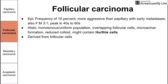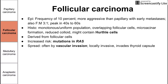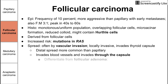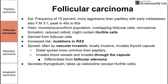Follicular carcinomas are also derived from follicular cells, like papillary. There's an increased risk in people with RAS mutations, a proto-oncogene. Follicular carcinoma is unique in that it often spreads by vascular invasion through the blood. It does have a capsule surrounding it, and what defines follicular carcinoma is that it breaks through this capsule — that is what differentiates it from follicular adenoma, which cannot be distinguished on histology alone but does not break through the capsule.